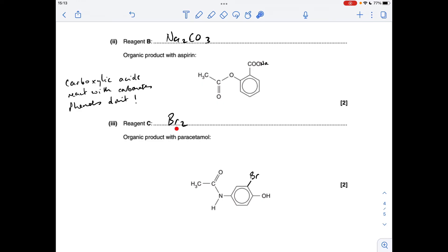Finally, reagent C that only reacts with paracetamol. The answer was bromine. You could either do what I've done and just put one bromine on here—could put it anywhere on the ring actually—or you could have put multiple bromines on if you'd wanted to.